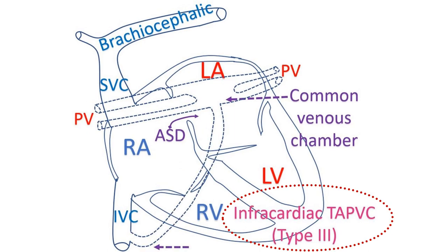Next is the infracardiac variety, in which the pulmonary veins go below the diaphragm. The pulmonary veins then join the portal vein in the liver and drain to the inferior vena cava. There is also a fourth mixed type, which is much less common.